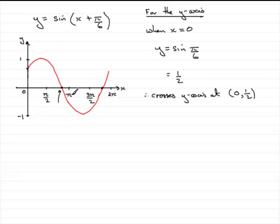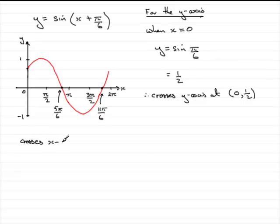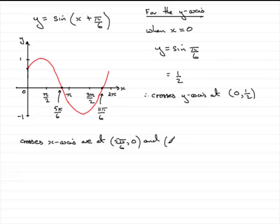All you have to do is take π/6 away from each zero of the original sine graph. So π minus π/6 gives 5π/6, and 2π minus π/6 gives 11π/6. So the coordinates where the curve crosses the x-axis are (5π/6, 0) and (11π/6, 0).